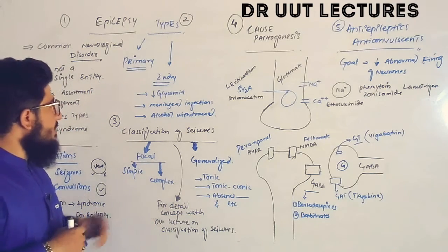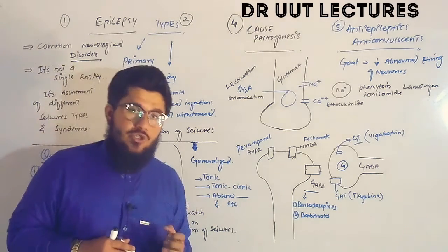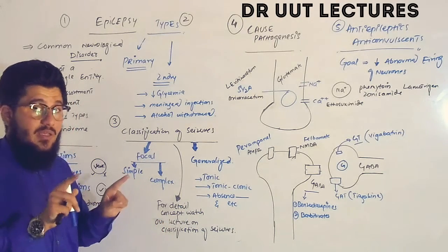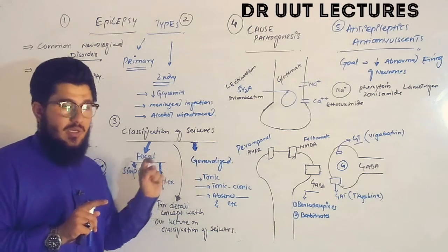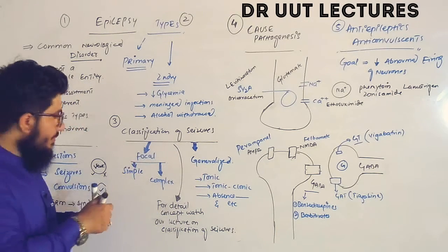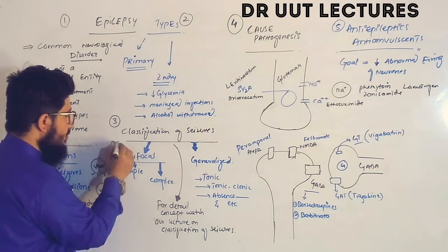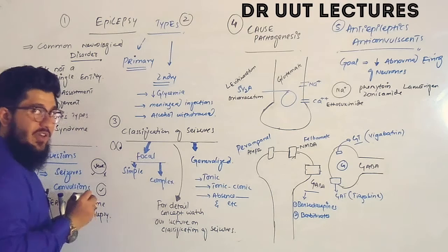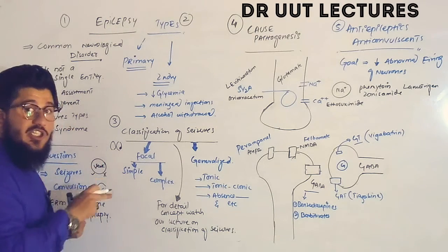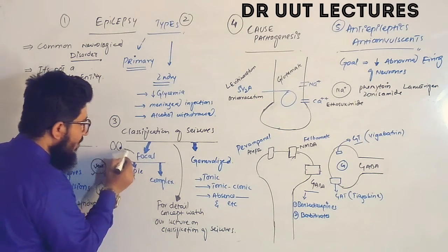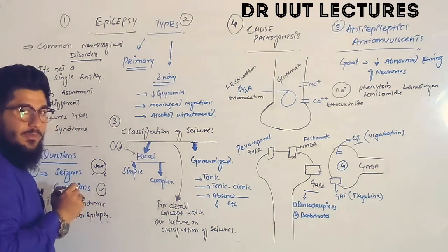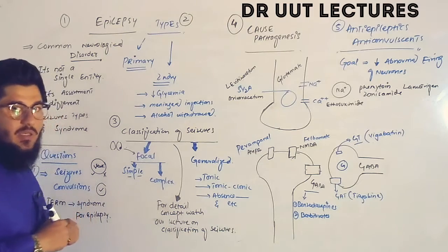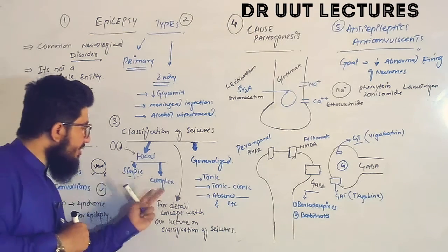Seizures are classified into two main types: focal and generalized. The brain is composed of two hemispheres; if seizures are generated in a particular portion of one hemisphere, that is called a focal seizure. Focal seizures are further divided into simple and complex types, differentiated by the level of consciousness.